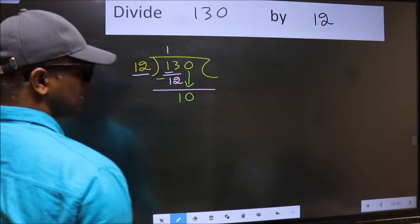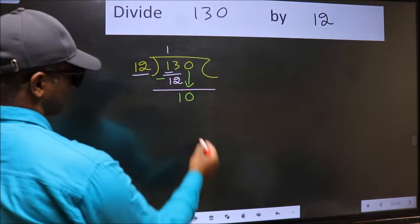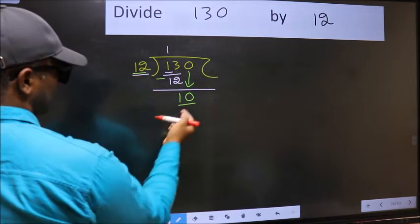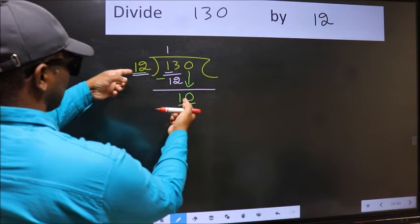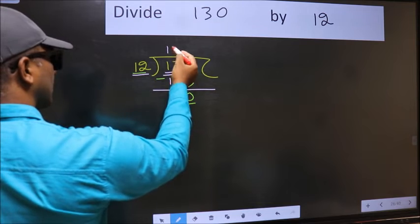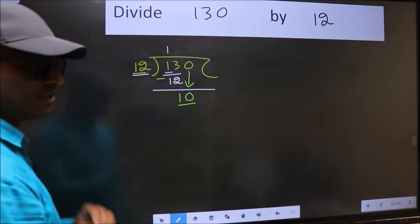After this step, the mistake happens. And the mistake is this. Here we have 10 and here 12. 10 is smaller than 12. So, what many do is, they directly put dot and take 0, which is wrong.